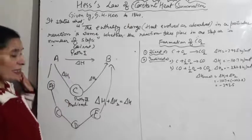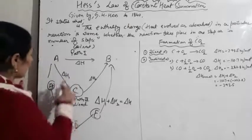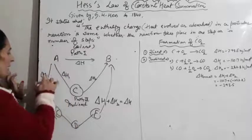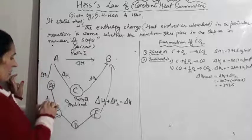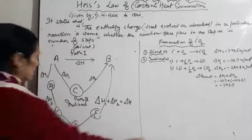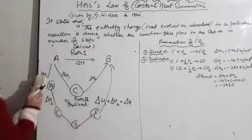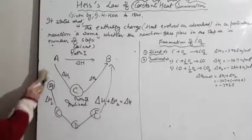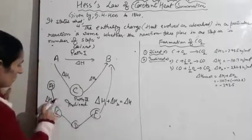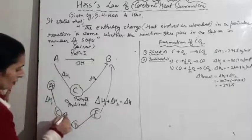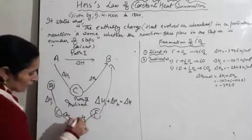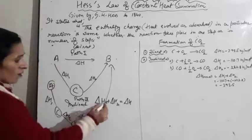In the multi-step case, there would be delta H1, delta H2, delta H3, and delta H4 at each intermediate step, and their sum total equals the overall delta H of the direct reaction.